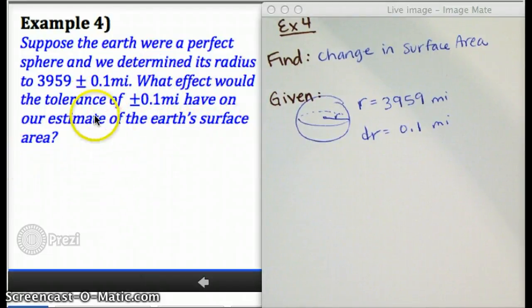What we're given is the radius of the sphere. And then when they say the word tolerance, maybe you remember this from Algebra 2, this is saying that the radius could change by up to 0.1 miles. In other words, 0.1 represents dr.